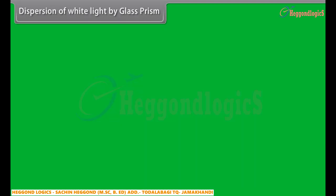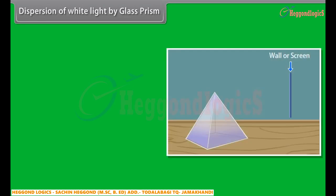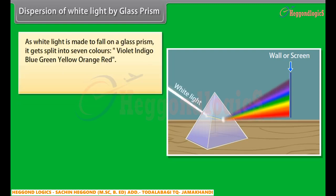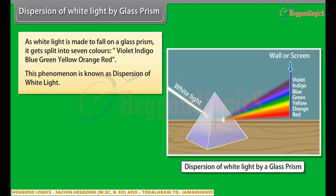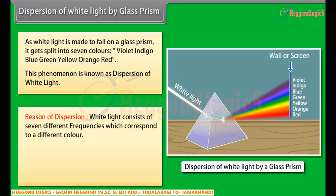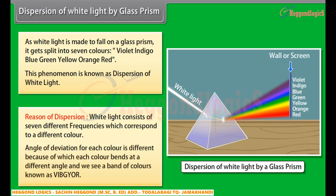Dispersion of white light by glass prism: as white light is made to fall on a glass prism, it gets split into seven colors — violet, indigo, blue, green, yellow, orange, red. This phenomenon is known as dispersion of white light. White light consists of seven different frequencies which correspond to different colors. The angle of deviation for each color is different, because of which each color bends at a different angle and we see a band of colors known as VIBGYOR.